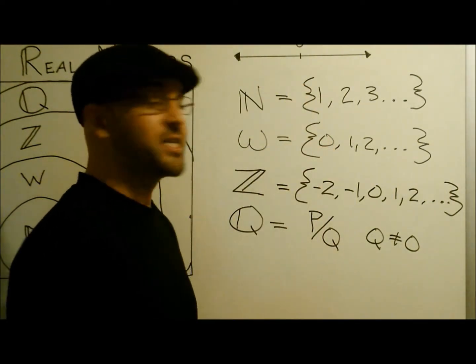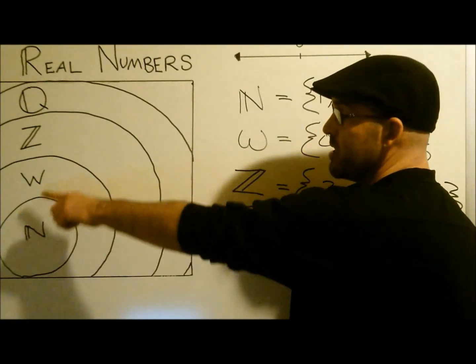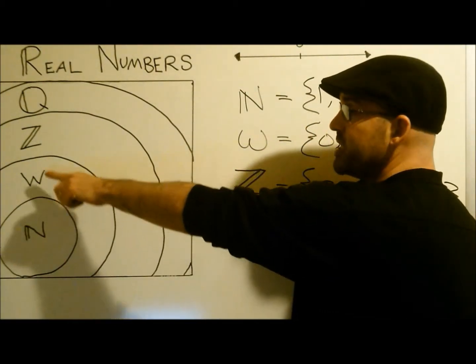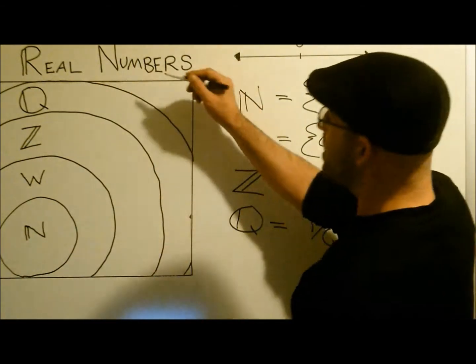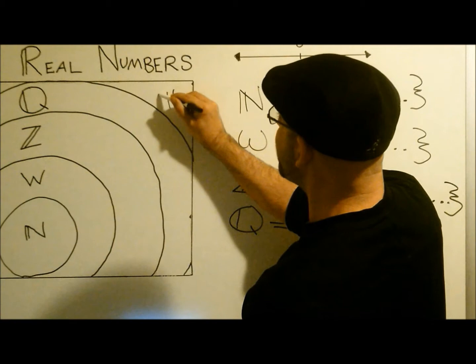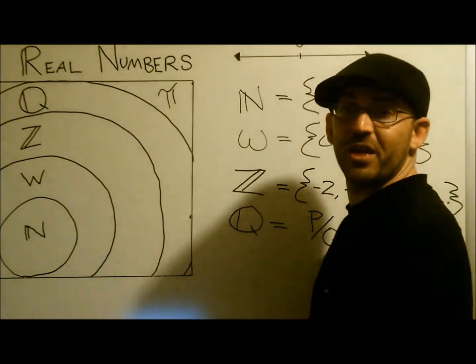Let's go over and see the real number system. We start with the natural numbers. Then we go to the whole numbers, integers, rational numbers, and out here we have the irrational numbers, such as pi. This whole box is the real number system.